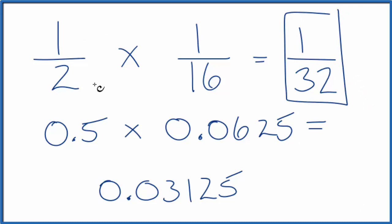So to recap, taking one half of one sixteenth, we just multiply one half times one sixteenth to get one thirty-second.